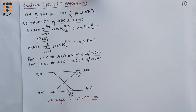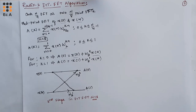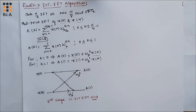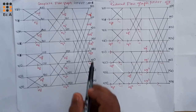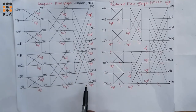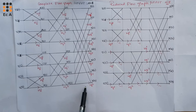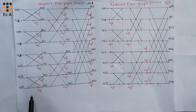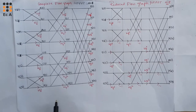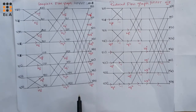Now let us combine the first stage, second stage, and third stage to write a complete flow graph. After combining all the stages, we get a complete signal flow graph. This is the first stage, this is the second stage of calculation, and this is the third stage of calculation. So this is the complete flow graph of DIT FFT for N equal to 8.